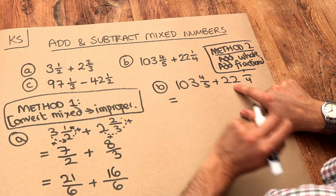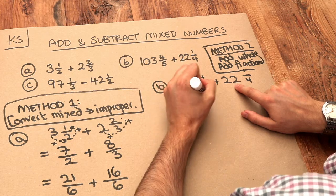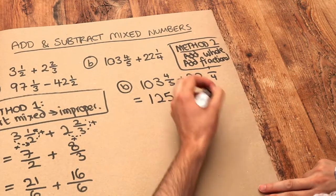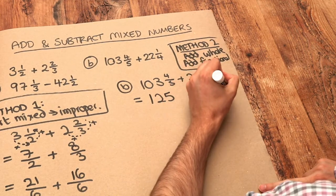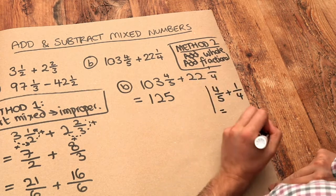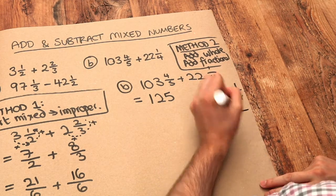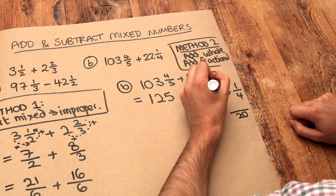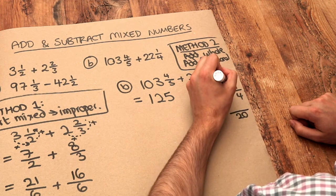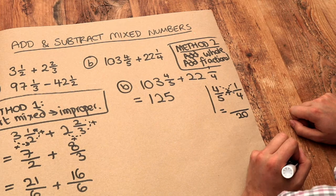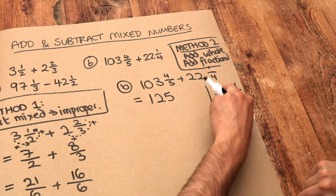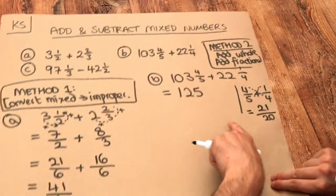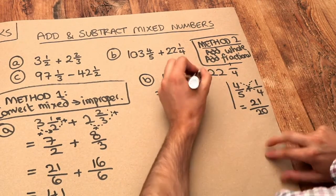If we add the whole parts, 103 plus 22 is just going to be 125. And we also need to add the four fifths and the quarter. Using the quick way to add fractions: multiply the denominators — five times four is 20 — then cross multiply the numerators: the four gets multiplied by four is 16, plus one times five is five, so 16 plus five is 21. So the fractional parts came to 21 twentieths.